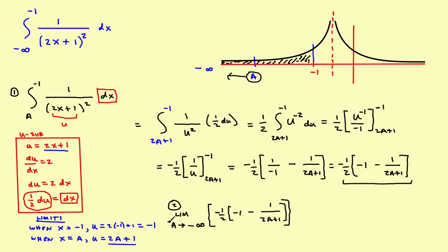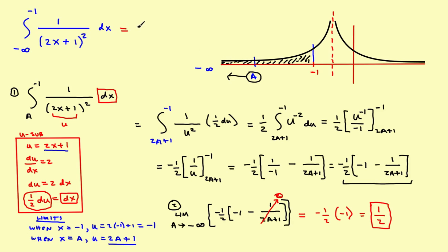If you let a go off to negative infinity, the denominator 2a + 1 becomes increasingly large, so the entire term one over (2a + 1) goes to zero. What you're left with is negative one half times negative one, which equals one half. So the area under this curve from negative one all the way out to negative infinity settles on the fixed number one half. Because it settled on a fixed number, this integral is convergent — the limit exists and it converges on one half.